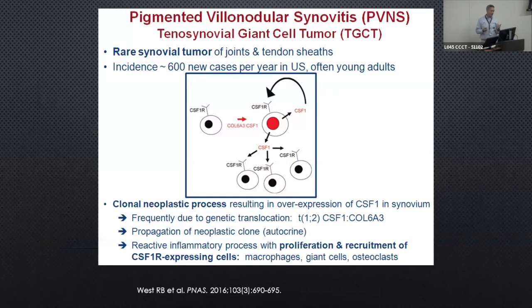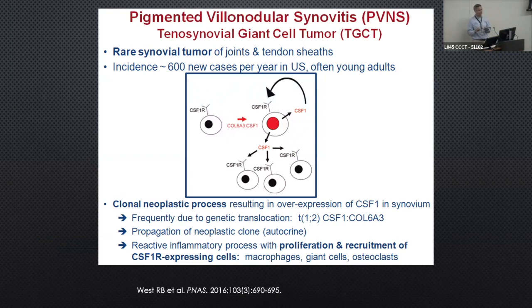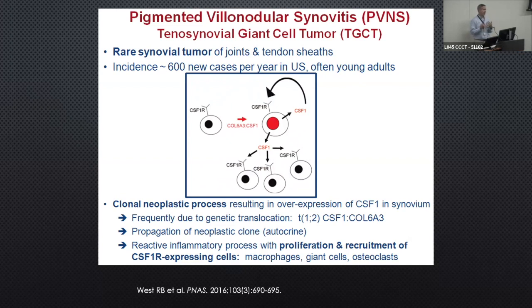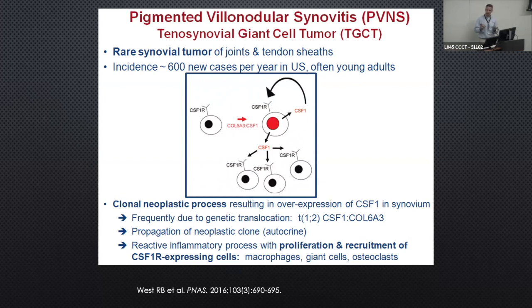Not to be repetitive of what we've already talked about, but this is the pathway that drives — and you're still going to hear me call it PVNS, because that's how I was trained. I always say TCGT instead of TGCT, so I'm going to stick with PVNS. The thing I get involved with is not so much the CSF-1 pathway itself, but all the recruitment of the inflammatory process that goes on because of it — the macrophages, inflammatory cells, swelling, and pain — which is why we get aggressive with this from a surgical standpoint.